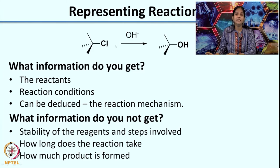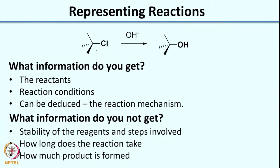Based on what we studied last week, this mechanism would probably be an SN1 mechanism. Because it is SN1, the first step is generation of the carbocation, and then in the second step OH- comes in to give the product. This information can be deduced from the arrow going from A to B, but you cannot clearly say that this intermediate is formed. The reaction also does not tell you how long the reaction takes — it can take 30 minutes, 1 hour, or 2 days.